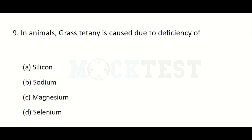In animals, grass tetany is caused due to the deficiency of: Option A: silicon. Option B: sodium. Option C: magnesium. Option D: selenium. The answer is Option C, magnesium.